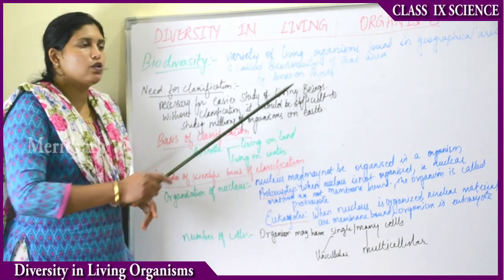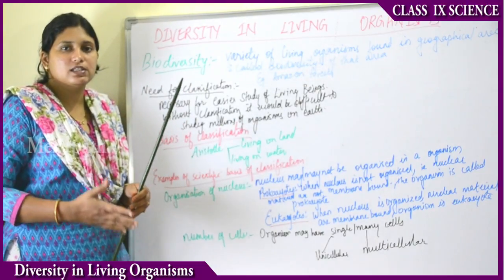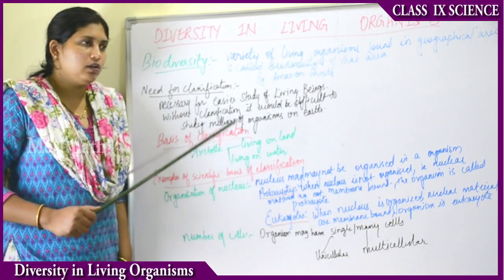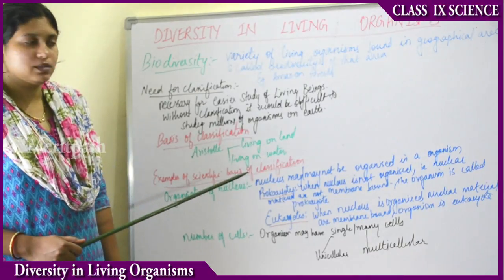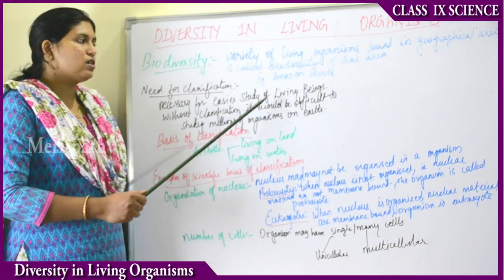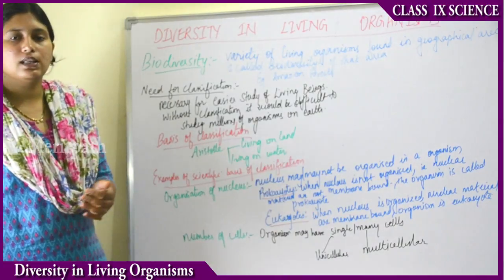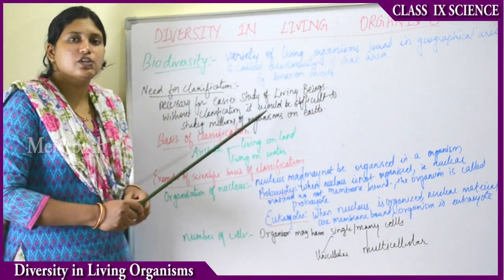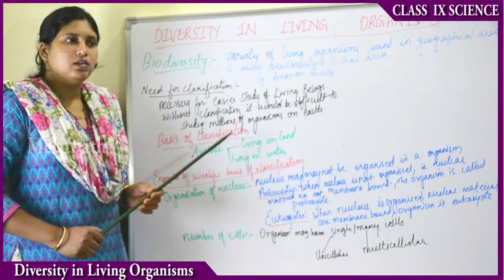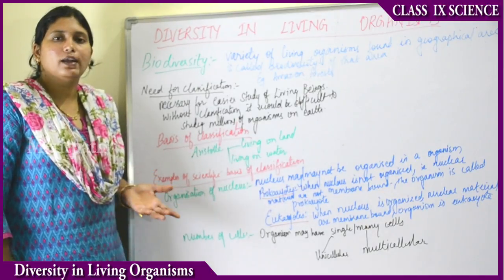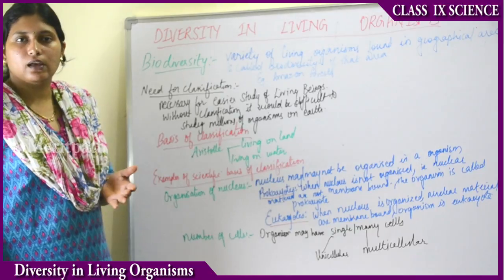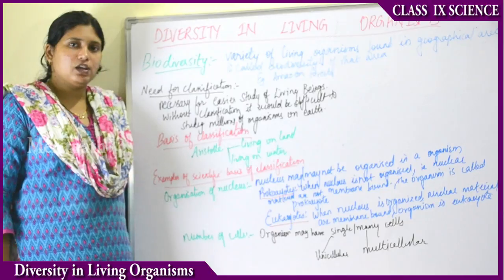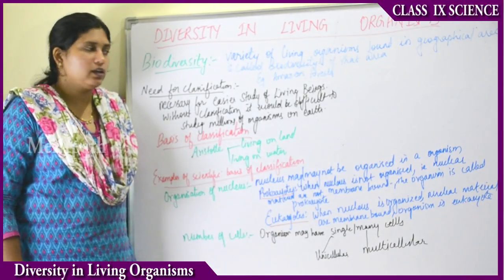The Amazon forests are regarded as the biggest biodiversity hotspot in the world. Classification is necessary for easier study of living beings, because there is a lot of variety among organisms. We do not have enough time to study everything around us, so proper classification makes it easier to study organisms systematically.